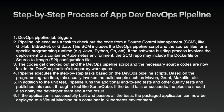The high-level step-by-step process is listed below. First, the DevOps pipeline job triggers. Step two, the pipeline job executes tasks to check out the code from a source control management system, SCM, like GitHub, BitBucket, or GitLab. This SCM includes the DevOps pipeline script and source files for the specific programming runtime — for example, Java, Python, Go, etc. If the software building process involves deployment to a container or Kubernetes environment, the SCM repo may include a Dockerfile or Source-to-Image, S2I, configuration file.